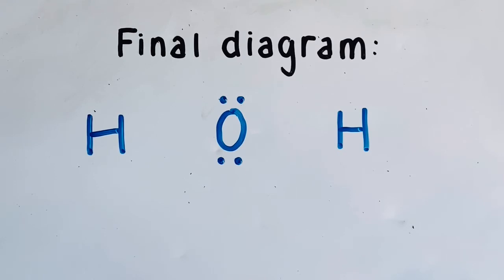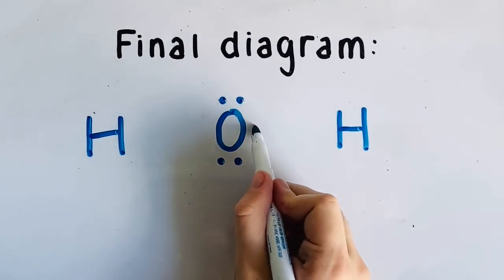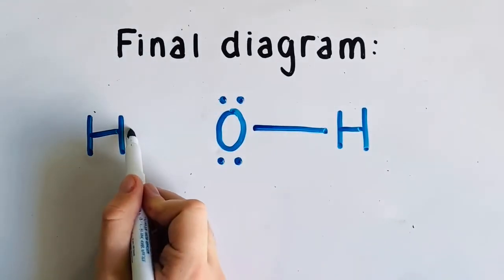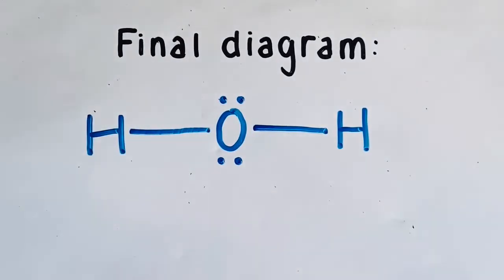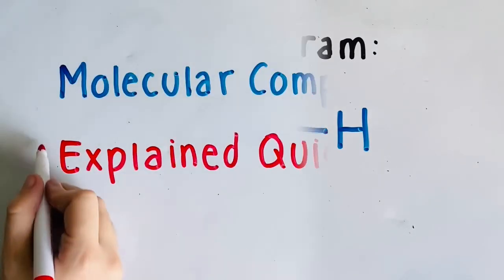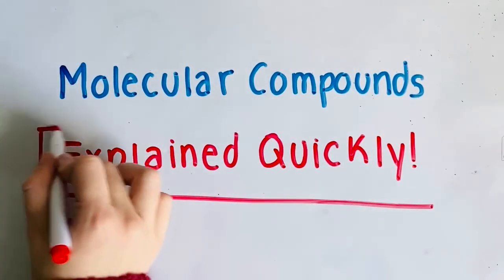So, you would draw out two hydrogen atoms and one oxygen atom. The oxygen atom has two pairs of electrons that were already previously paired, and you draw two lines connected to the hydrogen atoms to show that they are bonded and that both elements are sharing each other's electrons to complete their valence shells. And that's molecular compounds explained quickly.